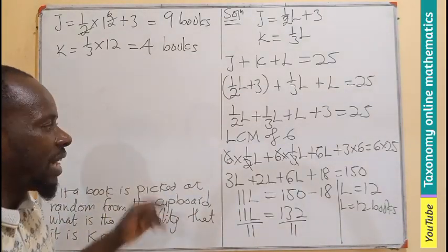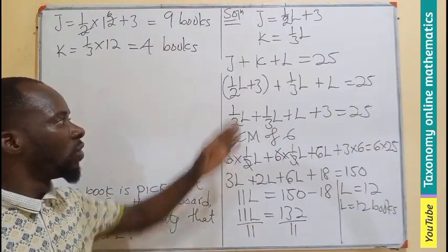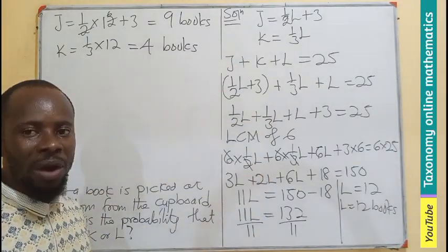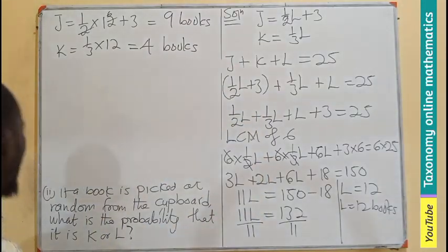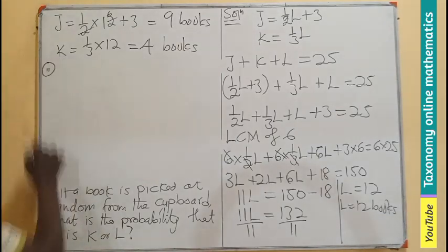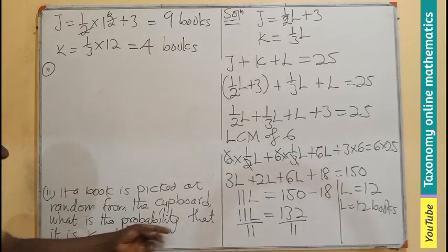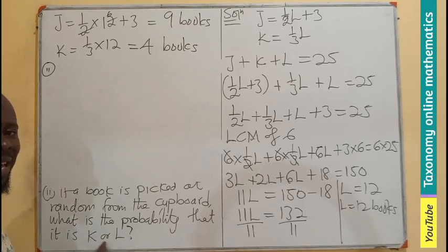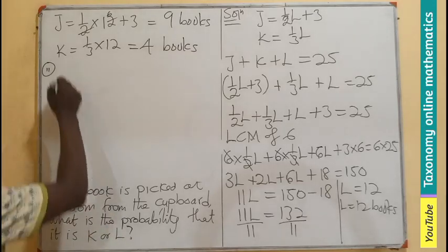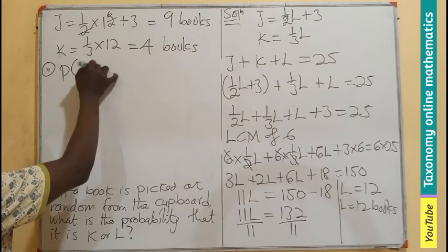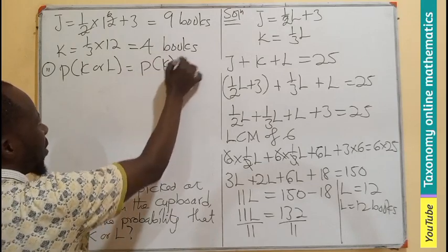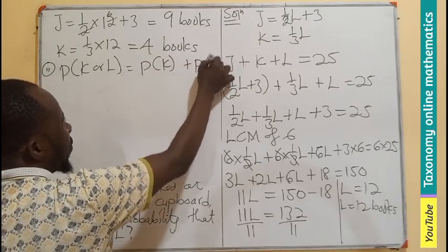For the second part, we need the probability of selecting book K or book L. Since this is a compound probability with 'or', we use addition. The probability of K or L equals the probability of K plus the probability of L.